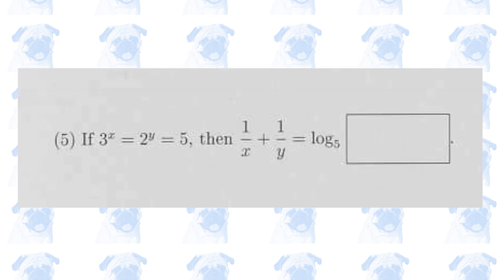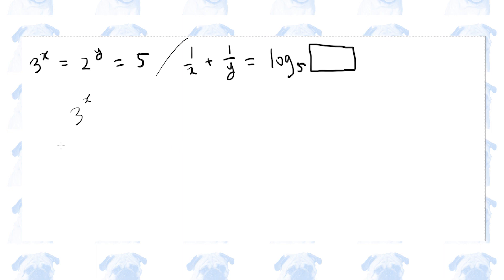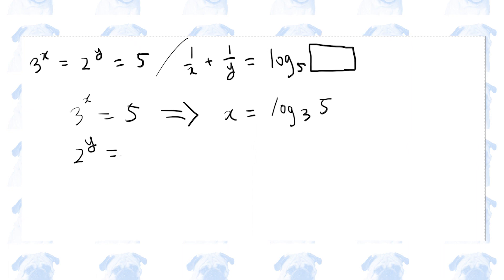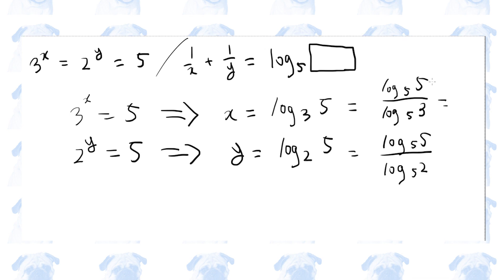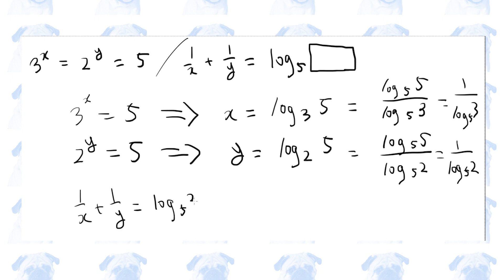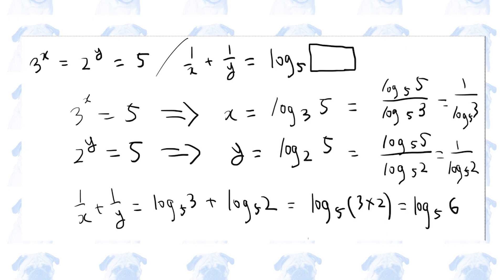Section 1, number 5. First, 3 raised to the power of x equals 5 implies x is equal to log base 3 of 5. Likewise, 2 raised to the power of y equals 5 implies y is equal to log base 2 of 5. Now let's apply the change of base rule to these two expressions, choosing 5 as the new base. Log base 5 of 5 is 1, so 1 over x plus 1 over y is log base 5 of 3 plus log base 5 of 2, which equals log base 5 of 6. So the answer is 6.